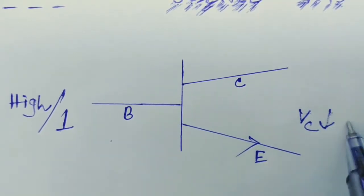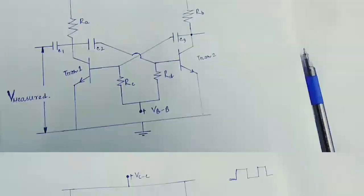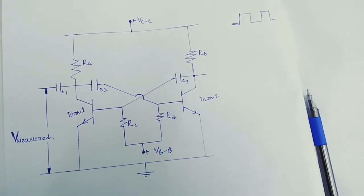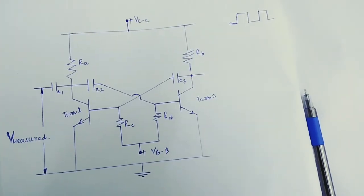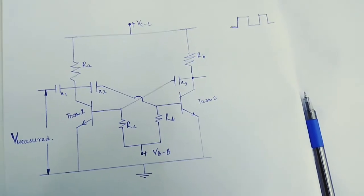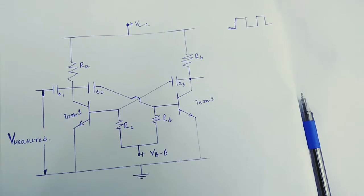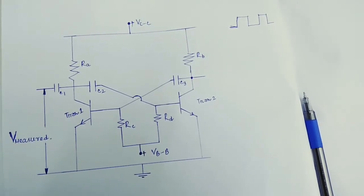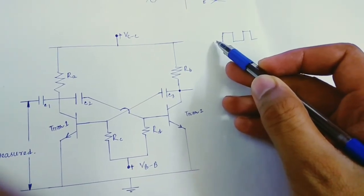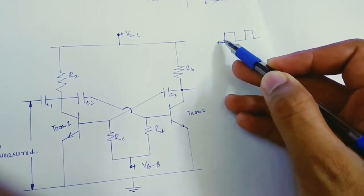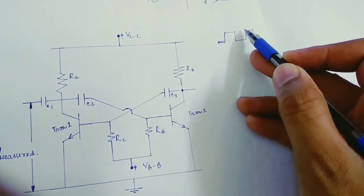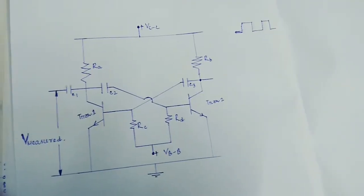If we consider this diagram as a standard diagram of an astable multivibrator — what actually an astable multivibrator does: if we consider one as some high voltage and zero as some low voltage, an astable multivibrator's output voltage doesn't constantly stay on zero or one. It actually happens like this: for some period of time it stays on zero, then for some period of time it stays on one, then again it comes to zero, then again it comes to one.